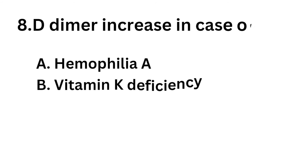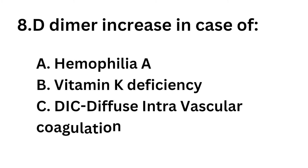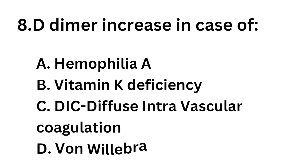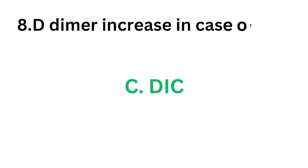Question number 8. D-dimer increases in case of. Option A: thrombocytopenia. Option B: vitamin K deficiency. Option C: DIC. Option D: Von Willebrand's disease. The correct answer is Option C, DIC — disseminated intravascular coagulation.